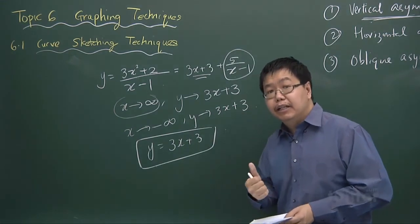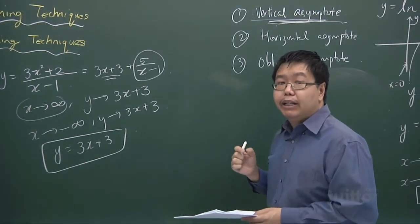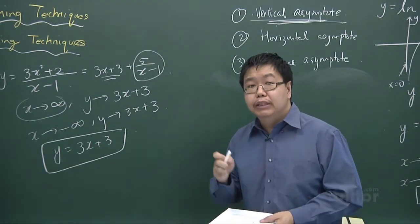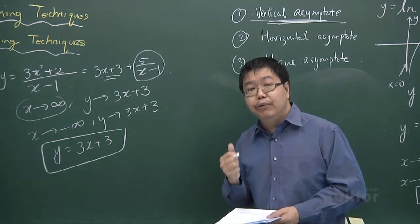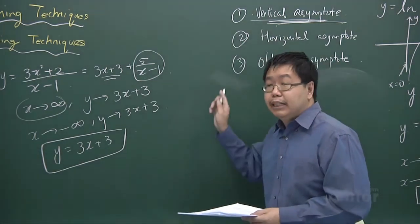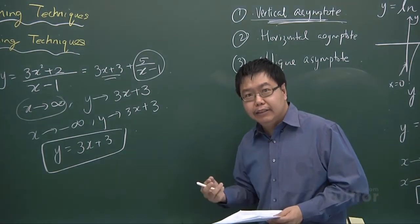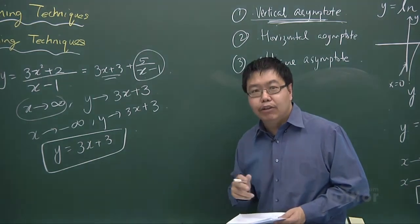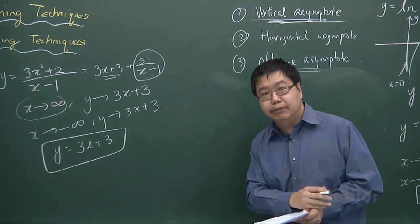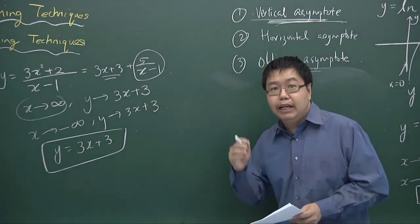To recap: vertical asymptotes are the x-values where the curve goes to plus or minus infinity, generally found by letting the denominator equal zero. Horizontal asymptotes are found using long division when the degree of the numerator is equal to or less than the degree of the denominator. The oblique asymptote is found the same way, except the numerator's degree is exactly one more than the denominator's, and the curve approaches a straight line.